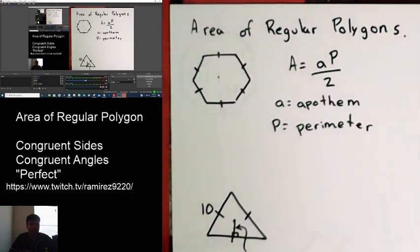I want to remind you that a regular polygon is pretty much a perfect figure. It's going to have congruent sides. It's going to have congruent angles.